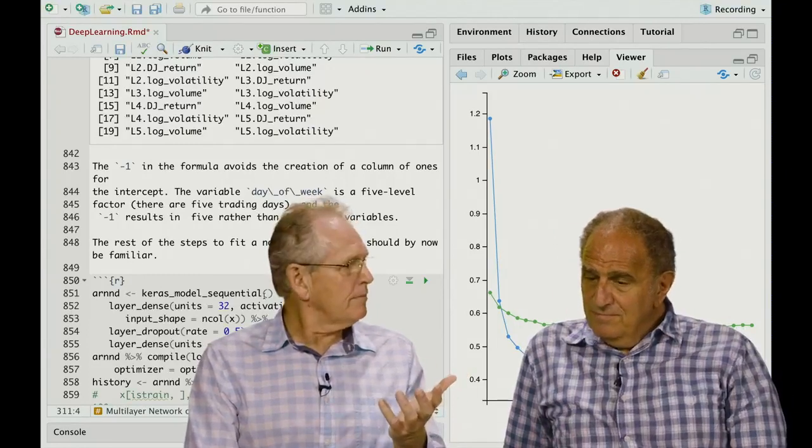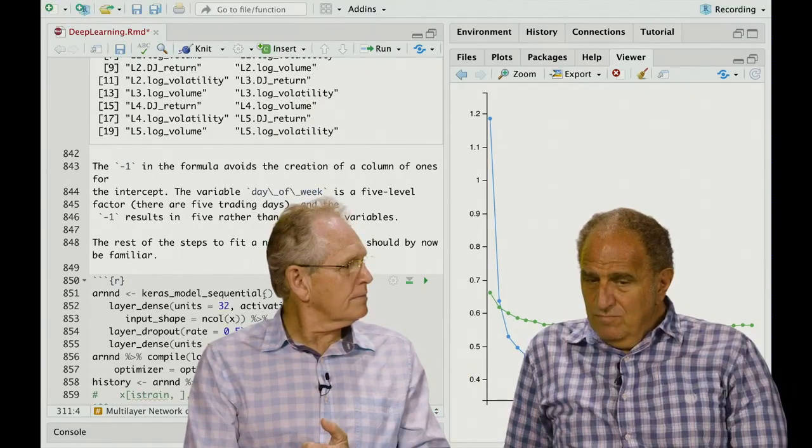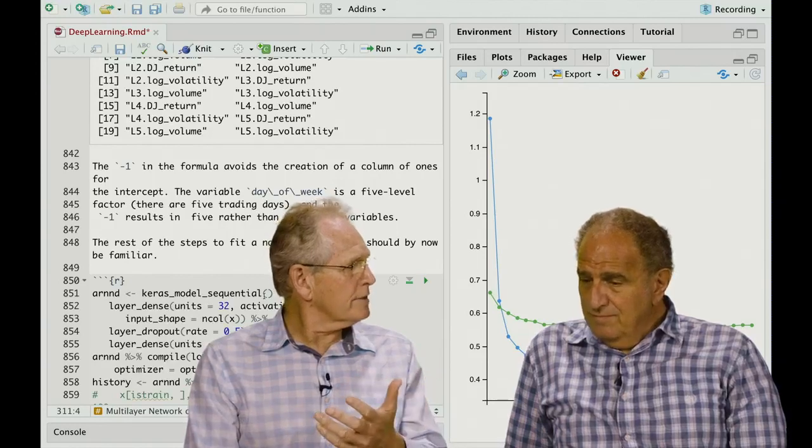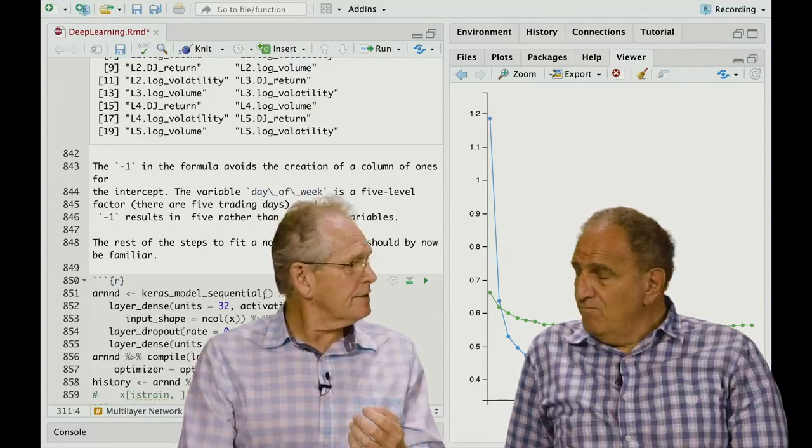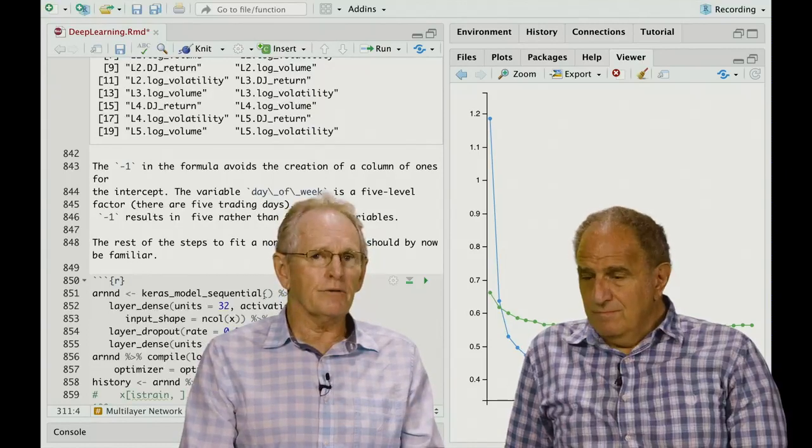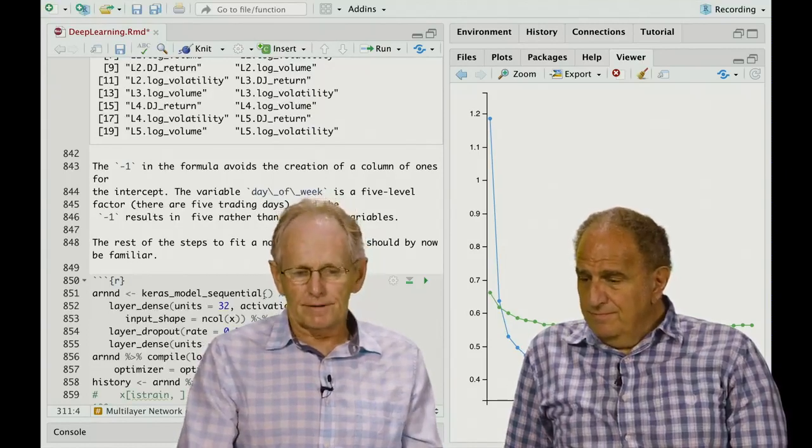Also, for the sentiment, the Glimnet-Lasso model did as well as the neural network. But on these other models, like the image classification, it's really hard to beat a neural network. They, you know, that's the way to go.